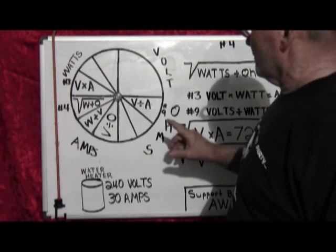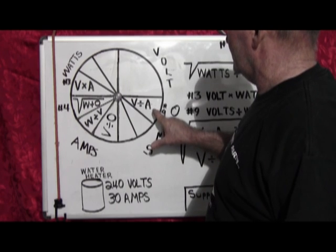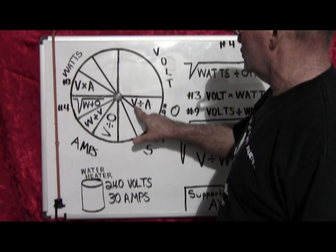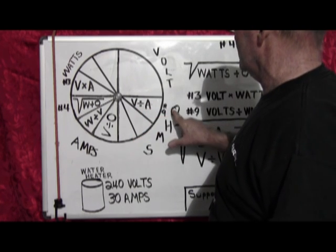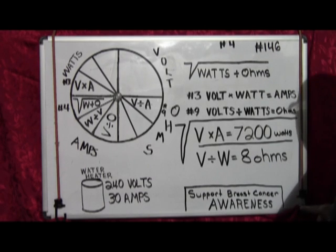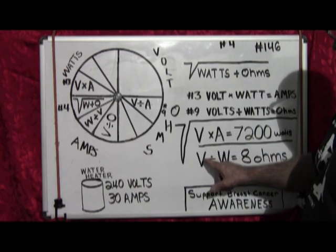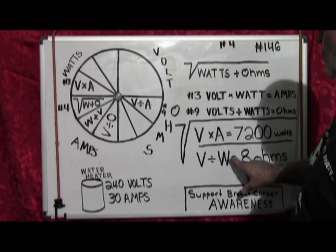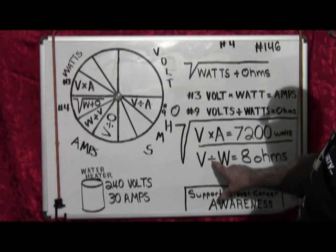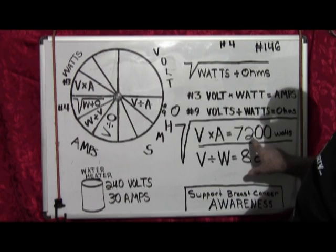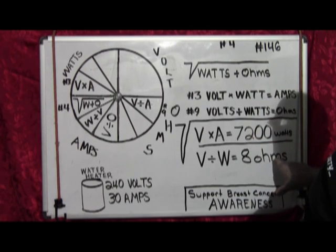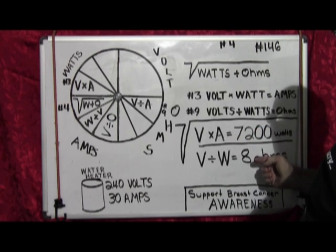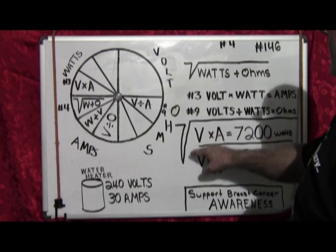Now we go over here to equation number nine in the ohm section, which is voltage divided by amperage gives you ohms. Again, very simple. You have 240 volts divided by 30 amps equals 8 ohms. We're dividing 7200 by 8 and taking the square root of that.